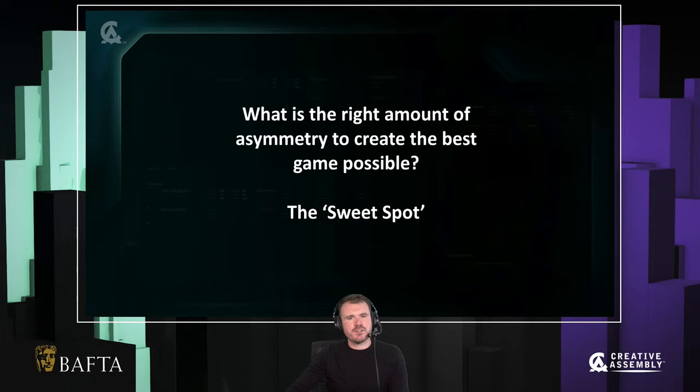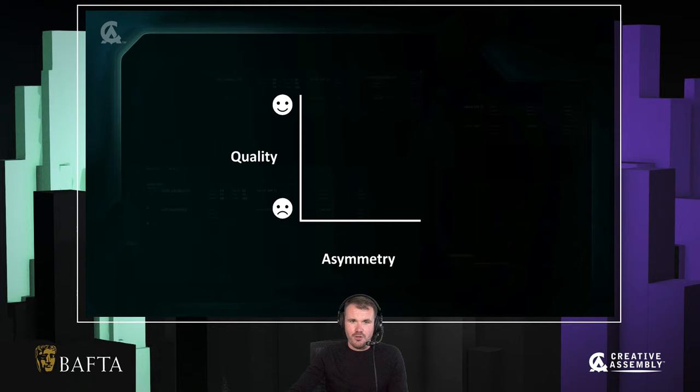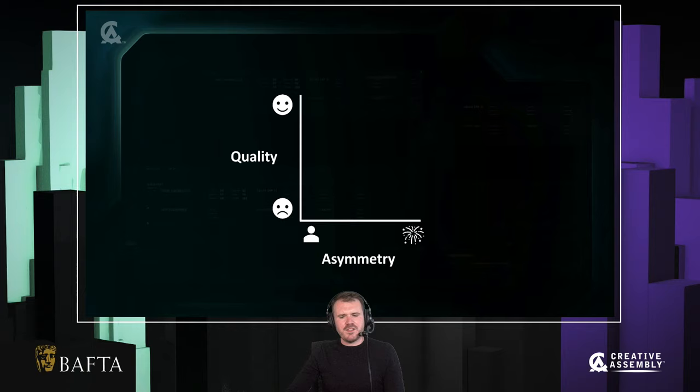The answer is you need to find the sweet spot — and obviously that's what this talk is about. Let's propose a graph: quality in a game versus asymmetry. Quality goes from a poor quality game to a very good game. Asymmetry goes from a completely symmetrical game to a completely asymmetrical game. To be clear, this is not a real graph — you'll never have real data to go in this graph. This is a thought experiment, and by modeling different outcomes in our minds experimentally, we can game out what our game looks like under different circumstances.